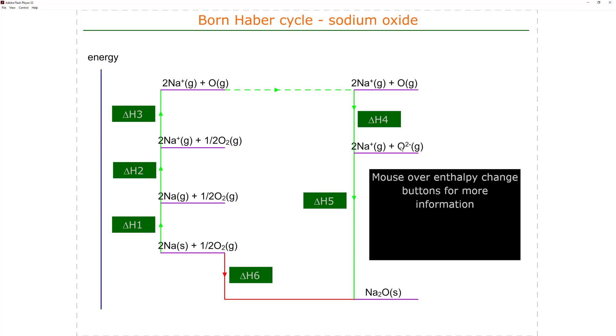There are two sodium ions and one oxide ion. We then put those into the lattice - this is the exothermic lattice enthalpy of sodium oxide. Going from the ions into the lattice releases energy.